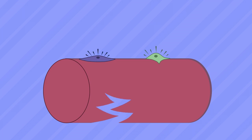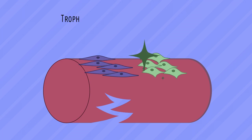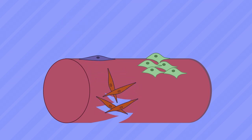satellite cells and FAPs become activated and expand rapidly. FAPs secrete trophic factors, like food for cells, that stimulate satellite cells to regenerate the muscle fiber.